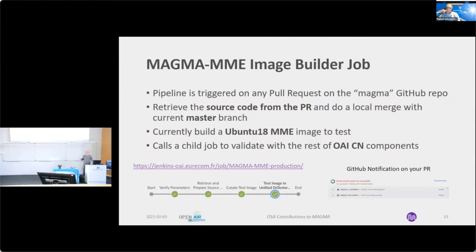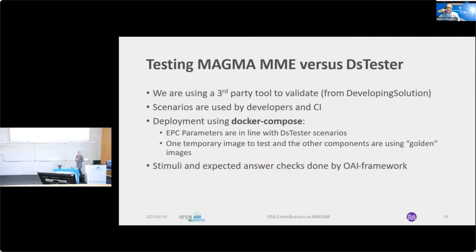The child job that tests versus DSTester is the one we also use for all our components. DSTester is a third-party tooling from Developing Solution that emulates the RAN and UE attachments. Scenarios are developed and used by both developers and the CI team. We deploy using Docker Compose with parameters aligned with the DSTester scenarios, and we pick one of the images to validate — for example, HSS or the Magma MME — while all other components use golden images.